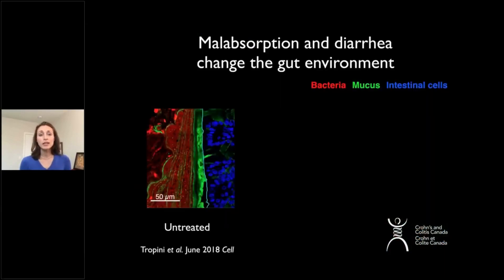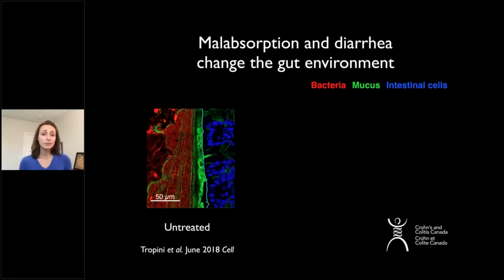One of the types of diarrhea that we study a lot is malabsorption. This is when there are compounds that are not being absorbed properly and they cause increased flow. This is also what happens with celiac disease, and it is also the mode of action of a lot of laxatives.